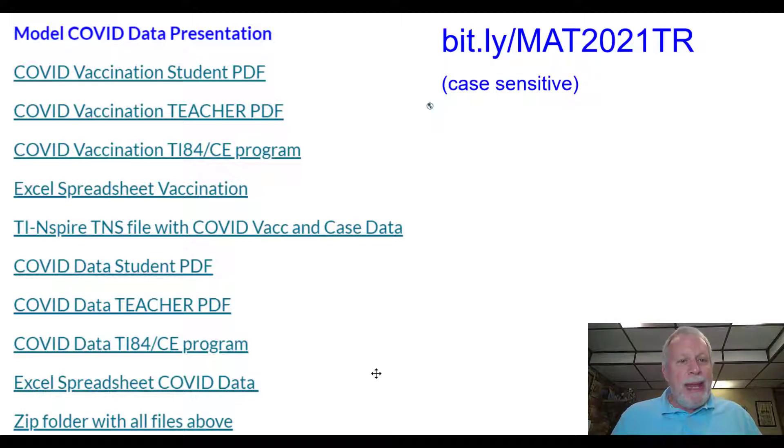This is what's on this site. I'll show that at the end, but there's a student PDF, a teacher PDF, 84 CE program that puts the data into an 84 CE, Excel spreadsheet. If you're not using an 84, TI-Nspire. And also similar data about COVID case data, not just the vaccination data. If you don't want to do them singly, you can just do the whole zip folder with all the files above.